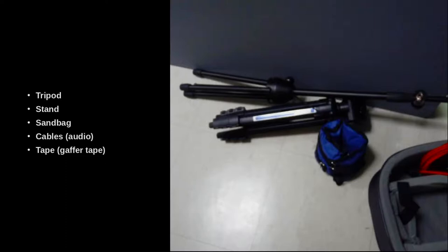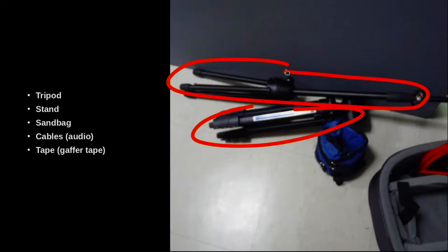When you go out on location, of course, you're going to need some other equipment, such as tripods for your camera, and then stands. These stands will hold things like microphones, lights, maybe some other things you need to hold. Sandbags. These are sandbags. I find these really, really useful to hold tripods down to keep things from falling over.